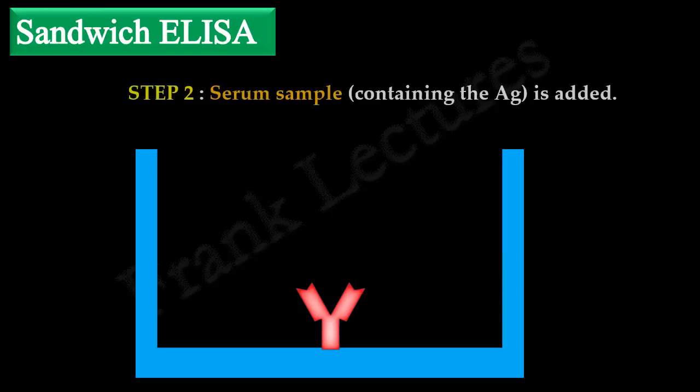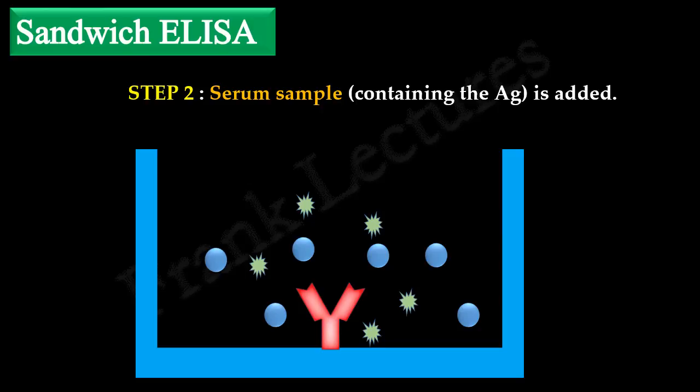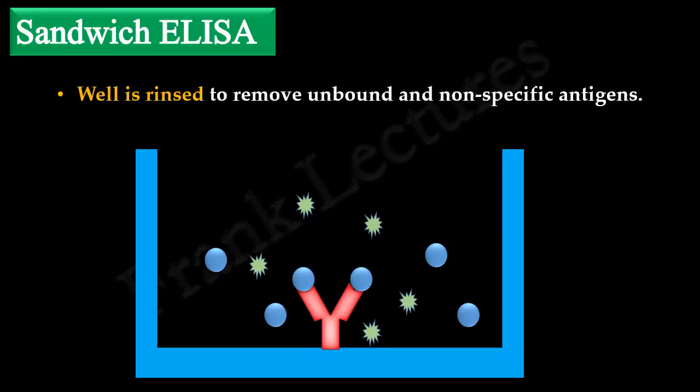In the second step, the serum sample or test sample is added to the well. Serum from a patient may contain many different antigens, but the capture antibody is specific for a single target antigen. If the sample contains the target antigen, it will bind to the capture antibody present in the well. If the specific antigen is absent in the test sample, no antigen-antibody binding takes place. Again, the well is rinsed to remove unbound and non-specific antigens.